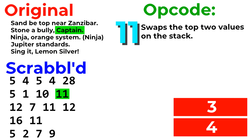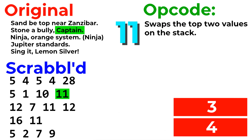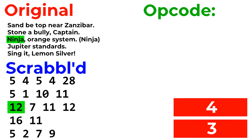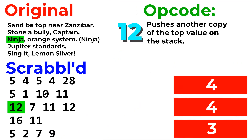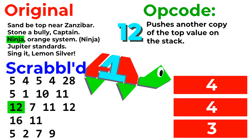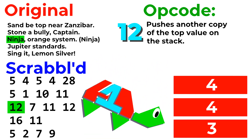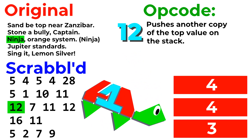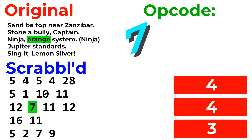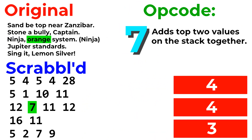Words with a value of 11, such as Captain, swap the top two values on the stack. The second value is brought to the top, and the first value is placed under it. This is so that we can manipulate the other value in the third line of code. Words with a score of 12, such as Ninja, duplicate the top value on the stack. Words with a score of 7, such as Orange, add the top two values on the stack together and leave just one result. Again, a fairly simple operation.